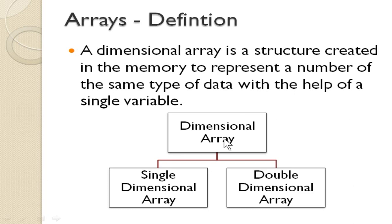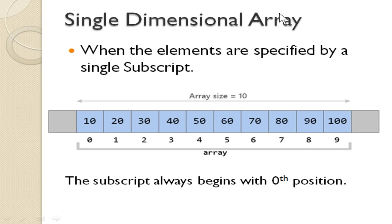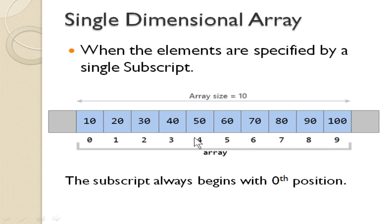You will have two types of dimensional array: single dimensional array and double dimensional array. First we will see about single dimensional array. When the elements are specified by a single subscript — subscript is nothing but the index value or position value — suppose if you have an array of size 10, you can store 10 different values. The subscript values start from 0 and go up to 9. If you want to invoke the fifth element, the position value is 4. You have to change the subscript value according to the necessity.